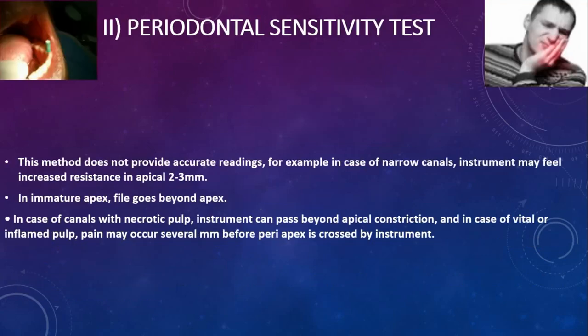The periodontal sensitivity test does not provide accurate readings. In narrow canals, the instrument may feel increased resistance in the apical 2–3 mm. This test involves advancing the file until the patient reports pain, as an indicator of approaching the apex. It can be used only as a supplemental method in working length determination.